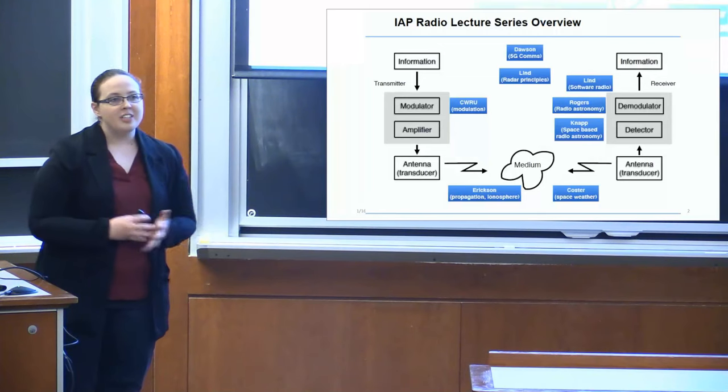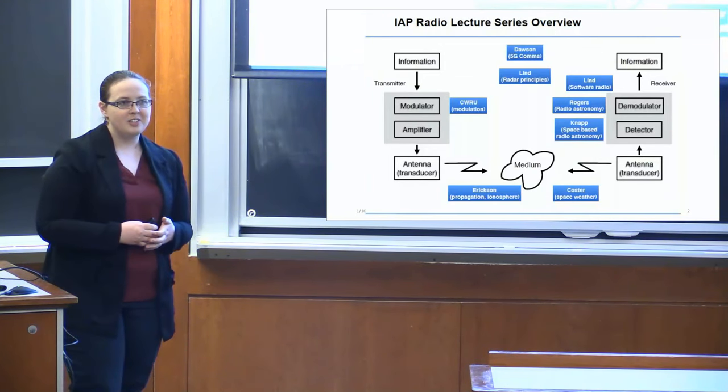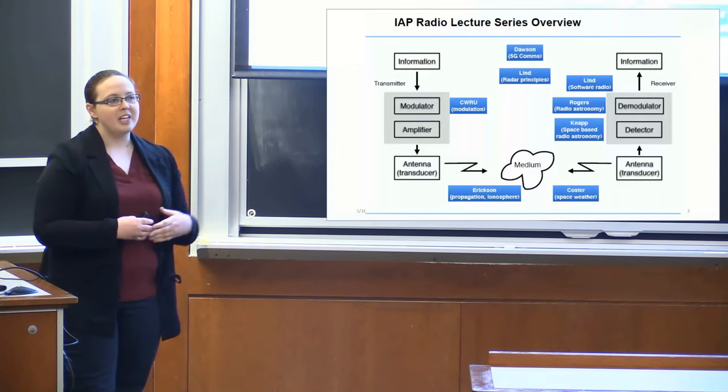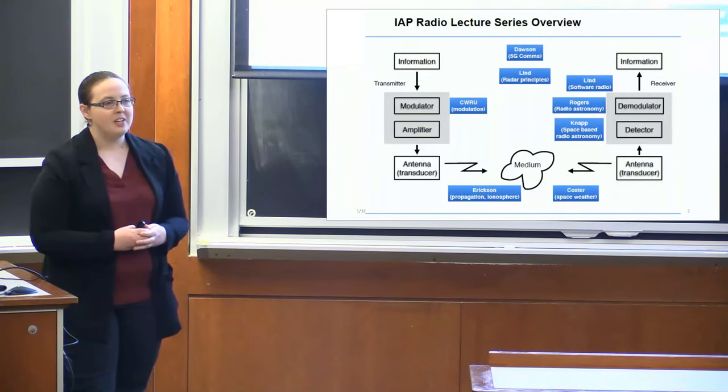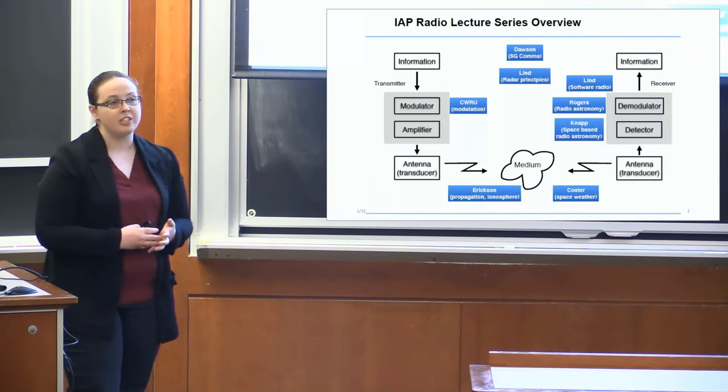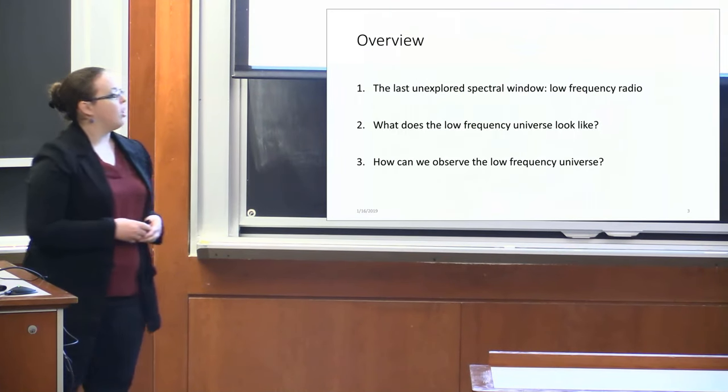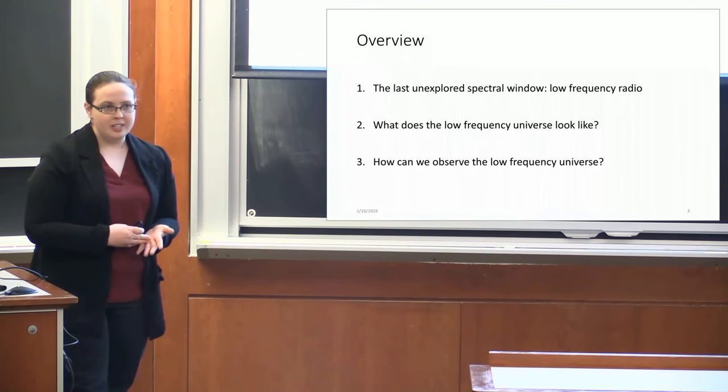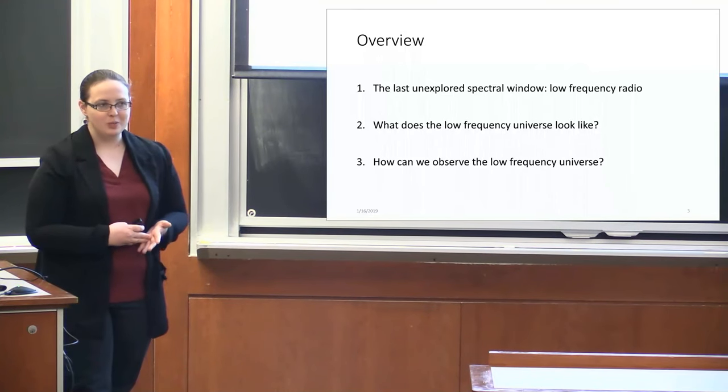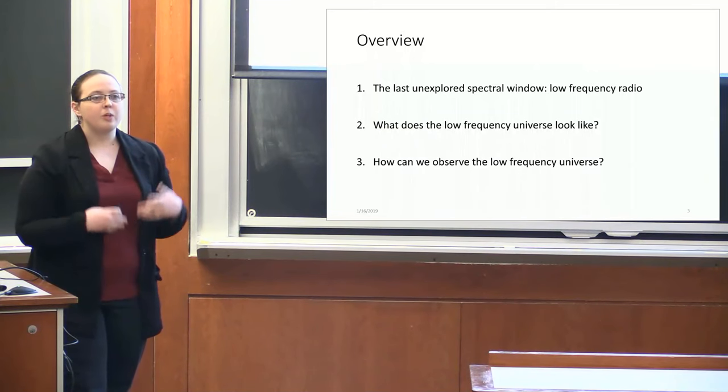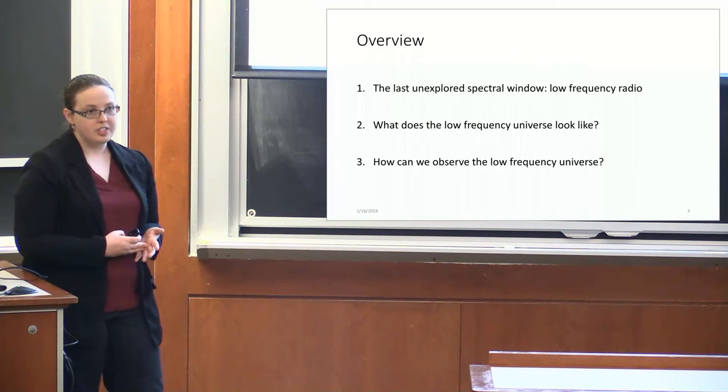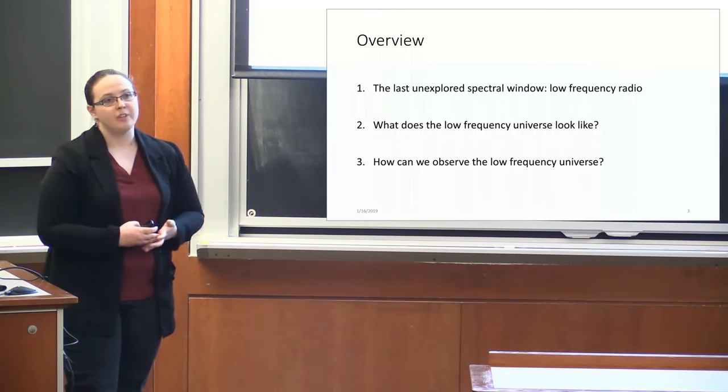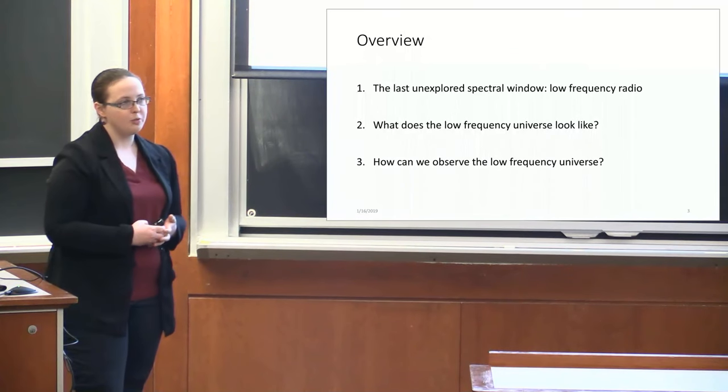So to put this talk in the context of the other ones from this series, this is a nice slide that Phil Erickson made to show where all these talks fit within the signal chain. I'm over here. I'm going to be talking primarily about data post-telescope, post-antenna. I'm not going to get much into signal processing details. You heard a bit about that actually yesterday from Alan Rogers. All right, I'm going to address three points in this talk. First, what is the last unexplored window of the electromagnetic spectrum? Spoiler, it is low-frequency radio. What does the sky look like or what do we think the sky looks like in this last window of the spectrum that we don't understand very well? And finally, what do we need to do? What kind of instruments do we need to build in order to explore this final frontier, to see the world, to see the universe in low-frequency radio waves?